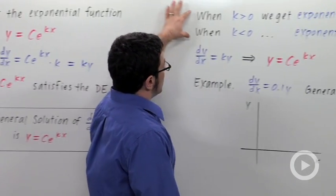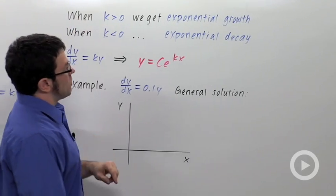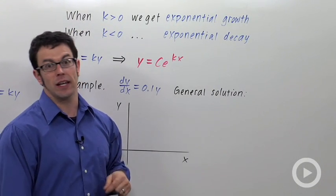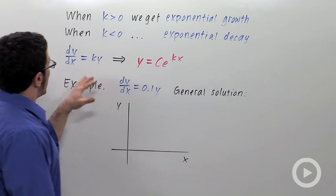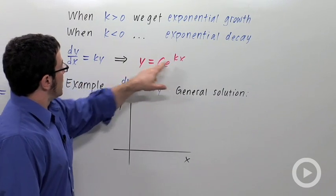Now, just to review, when k is greater than 0, we get exponential growth. And when k is less than 0, we get exponential decay. And that goes for both of these equations.